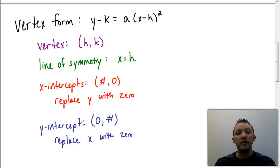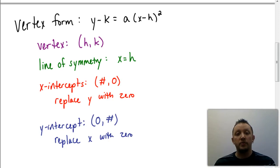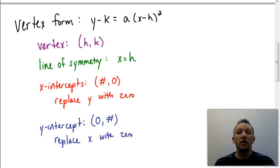Then we looked at how to find the x-intercepts. The x-intercepts are coordinates in the form where x is some number and y is always zero. So to find the x-intercept, we replace y with zero. And then we looked at the y-intercept. The y-intercept is also a coordinate in the form where x is zero and y is some number. So to find the y-intercept, we replace x with zero and use that to figure out what the value for y would be.